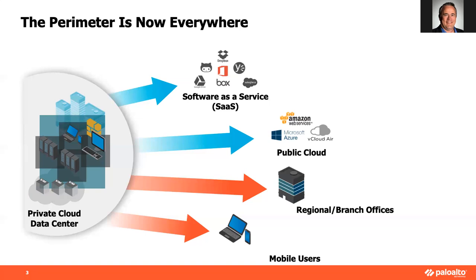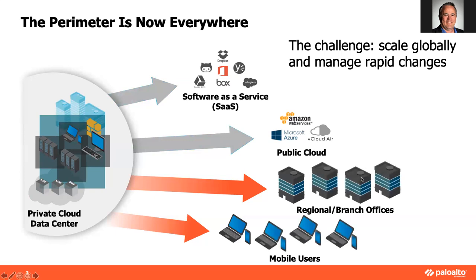Companies are growing, buying other companies, and adopting regional and branch office strategies. Here at Palo Alto Networks, we have our headquarters in California but regional headquarters in Dallas, Amsterdam, and Singapore, plus branch offices and sales offices all over the world. And of course mobile users — people at home, in hotels, at airports — working remotely. All of this is expanding quickly, and companies have had a hard time adapting.